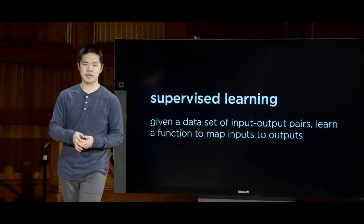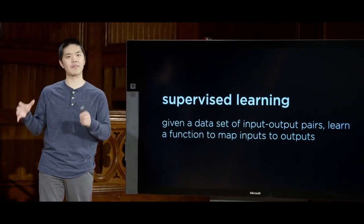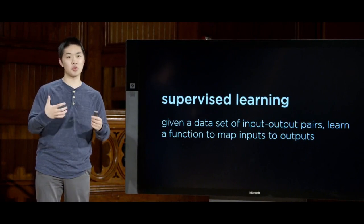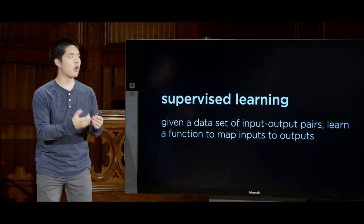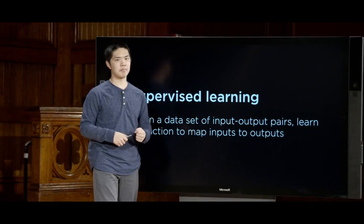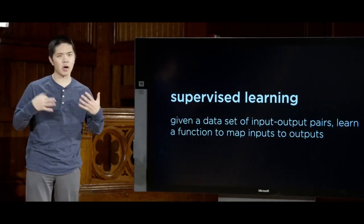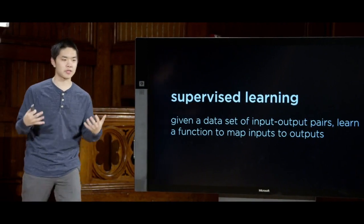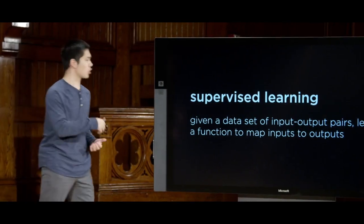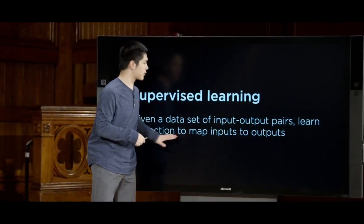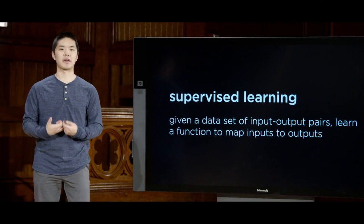We have a whole bunch of data that generally consists of some kind of input — some evidence, some information that the computer will have access to. We would like the computer, based on that input information, to predict what some output is going to be. We'll give it some data so that the computer can train its model on, to begin to understand how this information works and how the inputs and outputs relate to each other. Ultimately, we hope the computer will figure out some function that, given those inputs, is able to get those outputs.